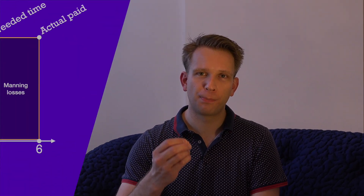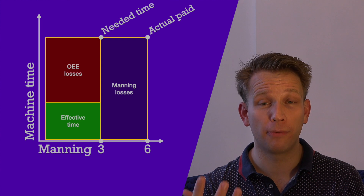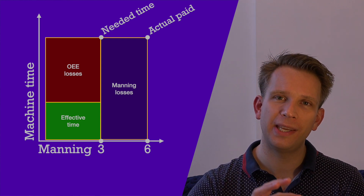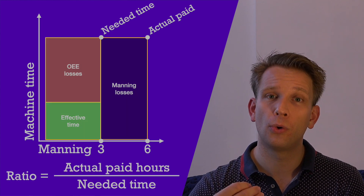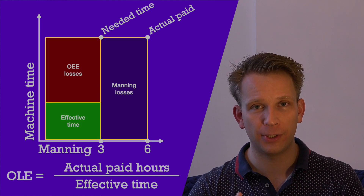Now I talked about the ratio of actually paid hours to needed hours. And if we multiply this by the OEE percentage, we get the overall labor effectiveness. These two — the OEE and the OLE — are very good performance indicators for your reporting. So to support your man-hours per tonne KPI, you can report simply the number of hours of manning loss, or you can go for OEE combined with either the labor ratio or the overall labor effectiveness. This will make for a much stronger reporting tool.